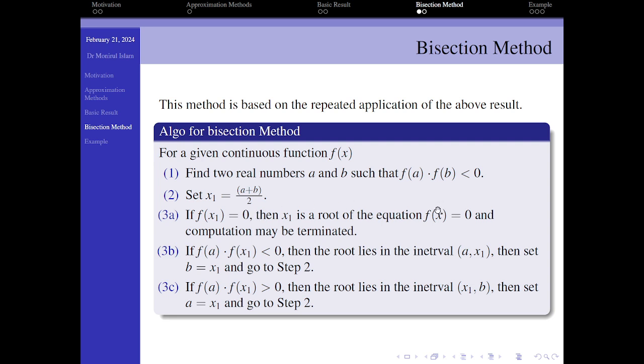If f(x₁) ≠ 0, that means we have to proceed. If f(a) and f(x₁) are of opposite sign, then by the previous result, the root lies between a and x₁, and then we have to apply the method again.